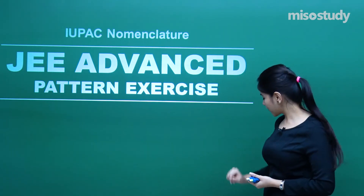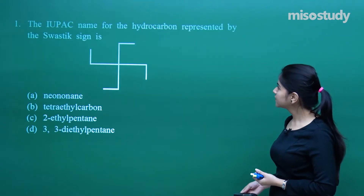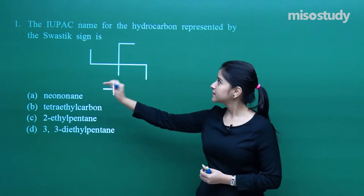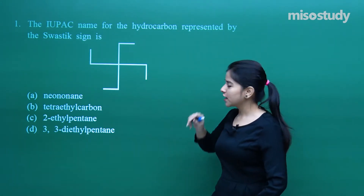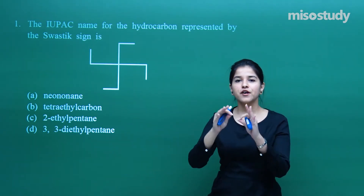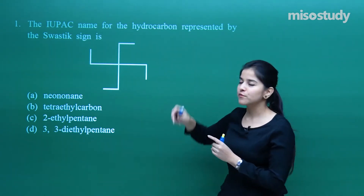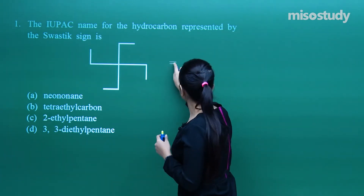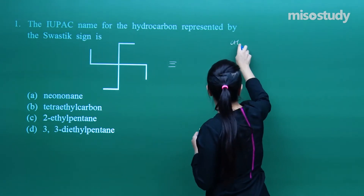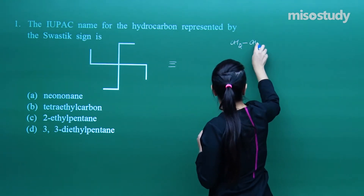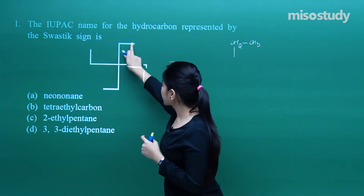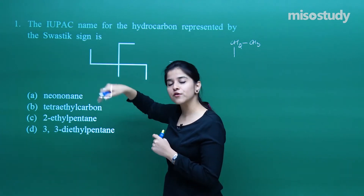Let us start off with the first question. I have got the IUPAC name for the hydrocarbon represented by this swastika sign. You need to find out the name — do not get confused by the images. You just need to have a proper structural formula for this bond-line formula, so let us form the structural formula.